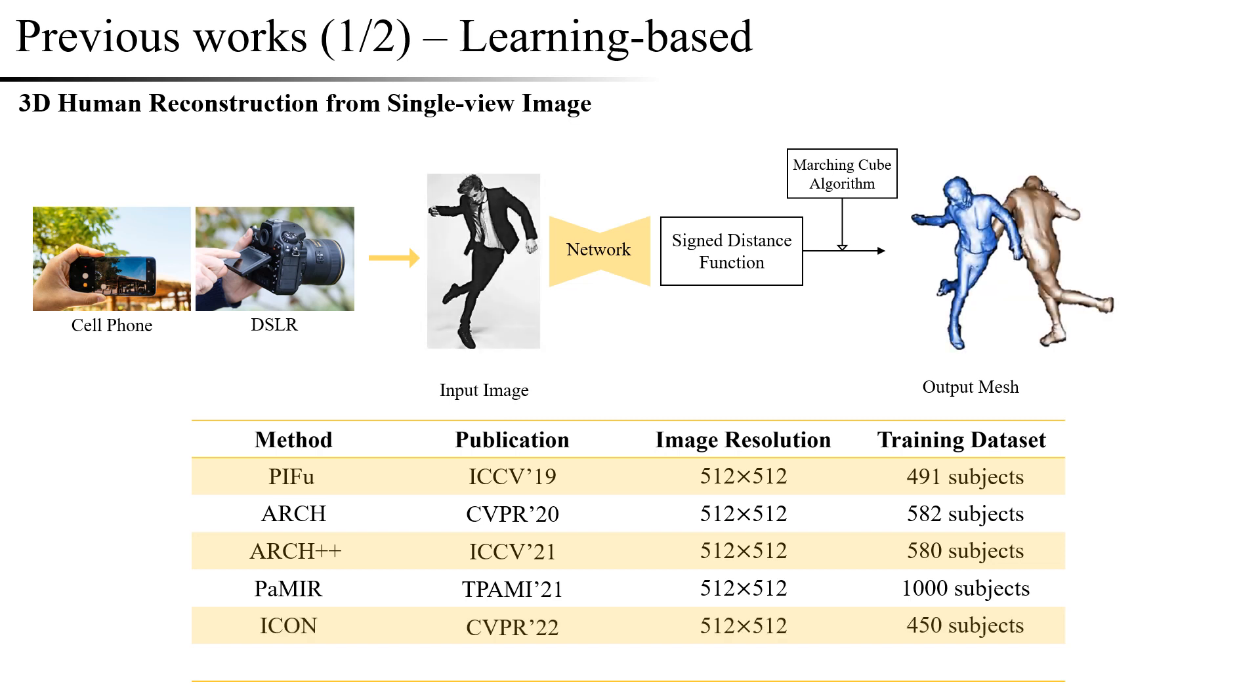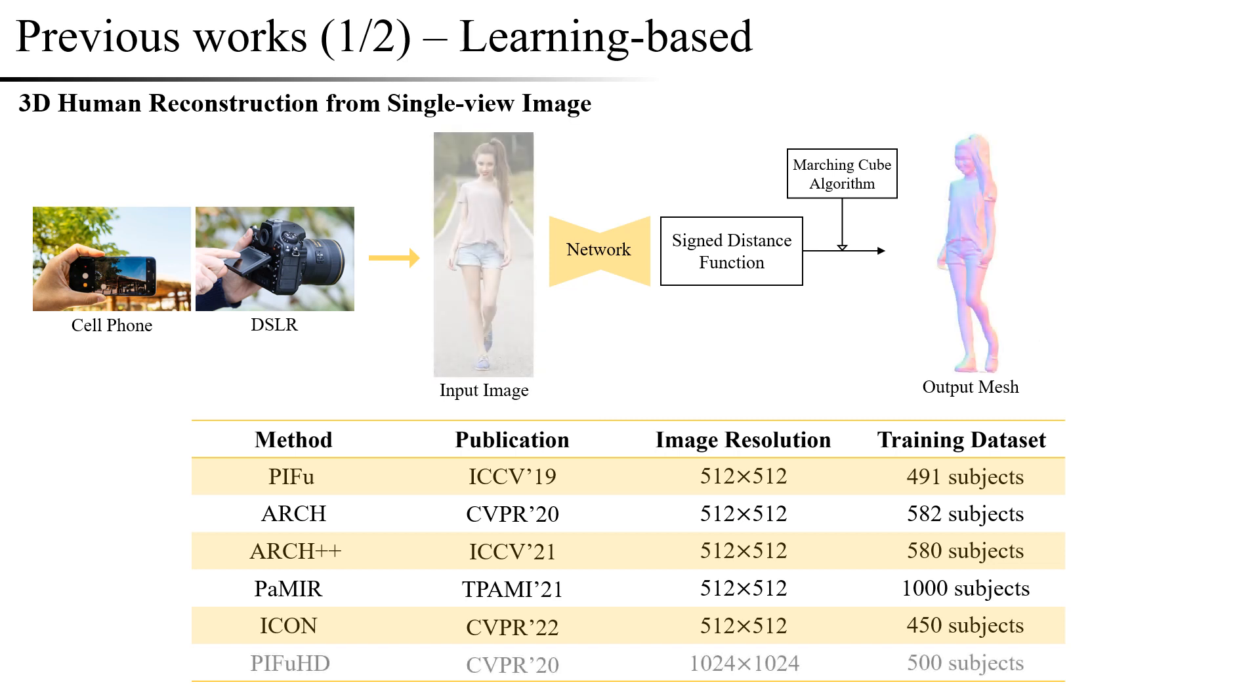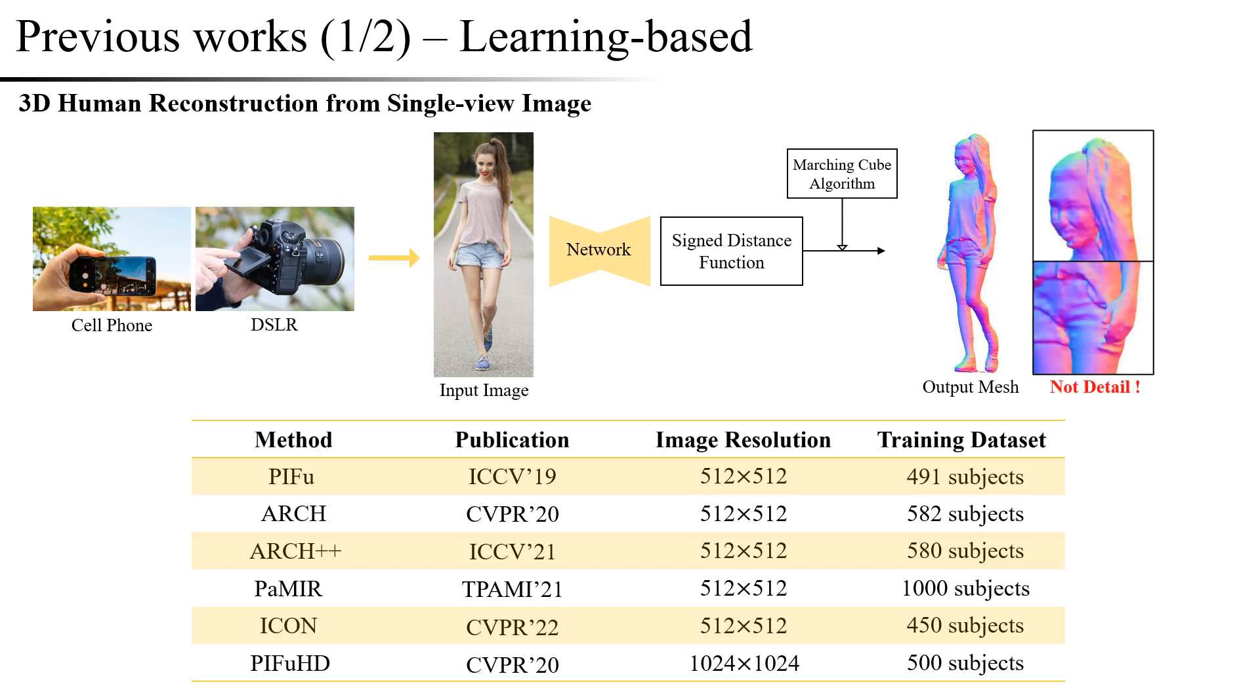but they generally suffer from low-quality results due to being trained on 512-resolution images. In contrast, PIFu HD reconstructed the human model using normal information with a resolution of 1024. However, even upon closer inspection, it can be seen that the level of detail is still lacking.